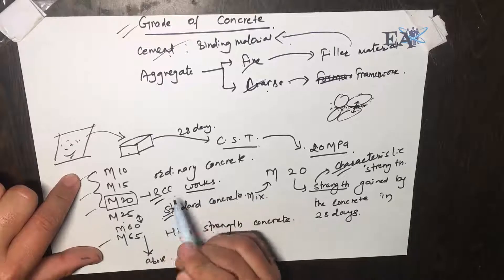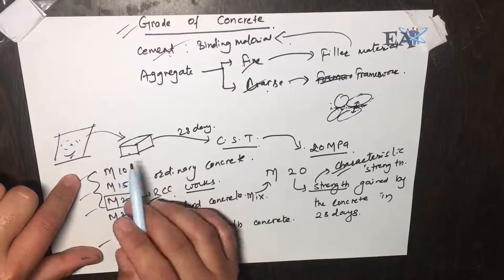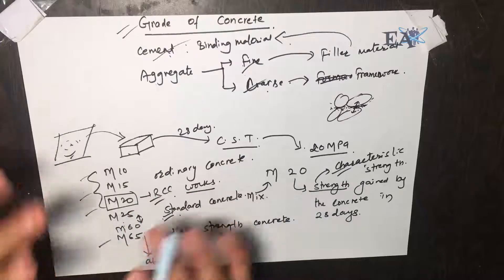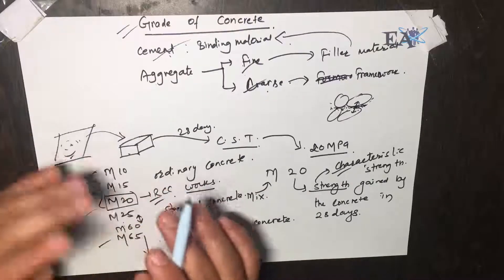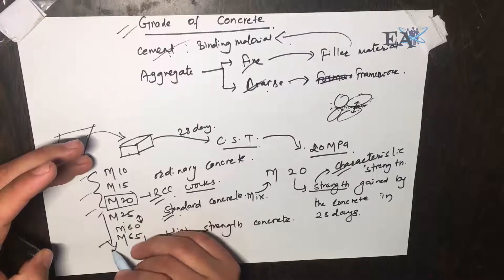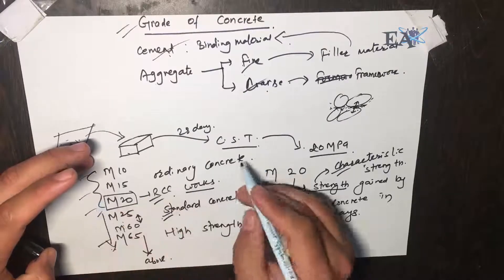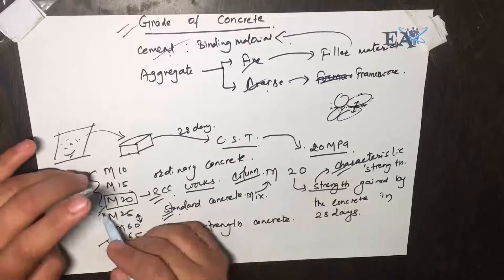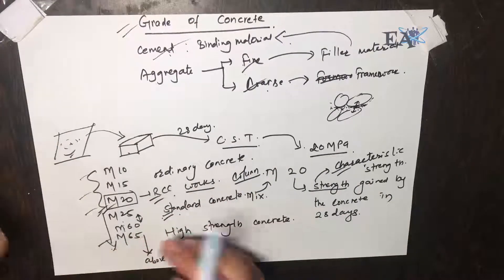You cannot go below this, and M15 and M10 you can use for very minor kinds of work. For example, if you are making a stable for a horse, you don't go for high strength concrete. But if you are doing casting of a column for any residential home, you have to use M20.